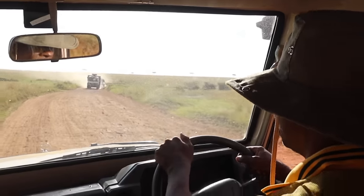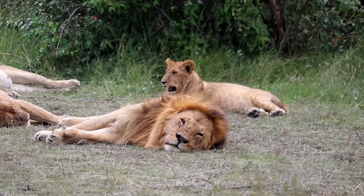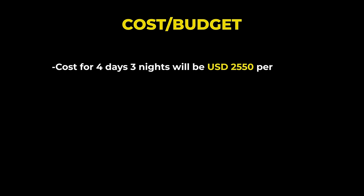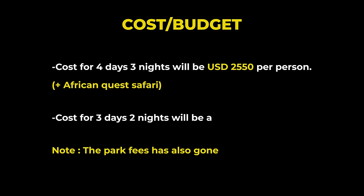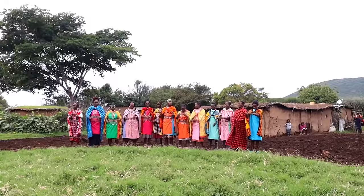In terms of budget, decide whether you prefer economy, comfort, or luxury — prices can vary from $200 to $1,000 per day. Ensure your guide has comprehensive knowledge of the flora and fauna found in the park, including names and behaviours. The cost for 4 days and 3 nights with African Quest Safari is USD 2,550 per person in peak season; for 3 days and 2 nights it is approximately $1,850 per person. Park fees have also increased from 1st January 2024 and you may need to pay $80 per person as a community fee, though this is still under legal consultation. Visiting the Maasai tribe costs $25 per person.